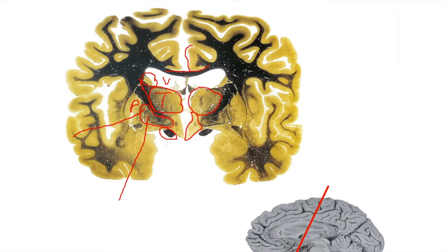The anterior commissure is also visible here within the hypothalamus, now traveling anterior-posteriorly rather than straight across horizontally, again connecting the amygdalae so they can process information together. The amygdala is a nuclear region on the deep medial side of the temporal cortex.